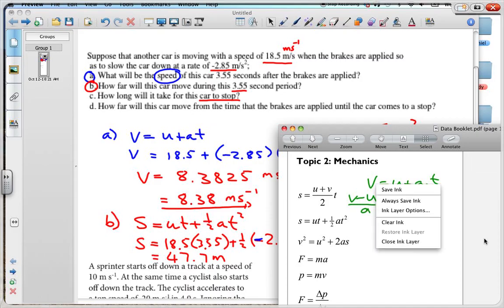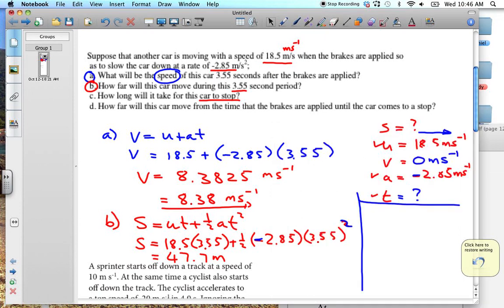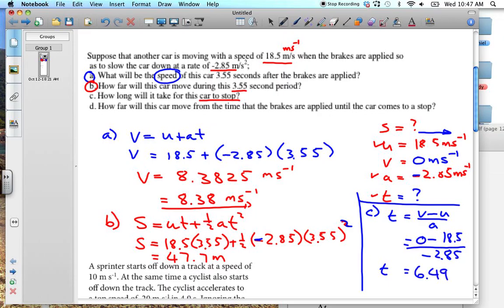And so we can use that. So we're going to get T, this is for C. T is equal to V minus U over A. And so we just put it in. The V is equal to 0. It's minus 18.5 divided by minus 2.85. That's important, otherwise we get negative time, which we don't want to get. So we get minus 18.5 divided by minus 2.85. And I get 6.49 seconds.